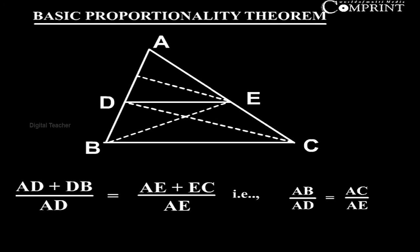That is AD plus DB by AD equal to AE plus EC by AE. That is AB by AD equal to AC by AE.